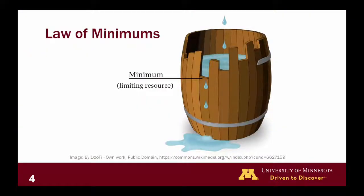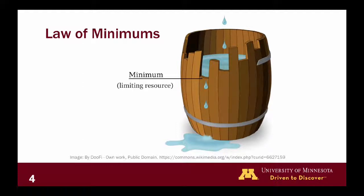These factors bring us to an important concept called the law of minimums. Growing space is the sum of all those factors, but one of these factors is eventually going to become limiting. Trees are going to use each of these factors until something limits their growth. We can think of that using a barrel with planks of different lengths filled with water — the water hits the shortest plank first. For example, if that plank represents nitrogen, when nitrogen becomes limiting, that limits tree growth. We can add more nitrogen by fertilizing the site; however, then water may become limiting. There's always going to be some factor that limits growth.